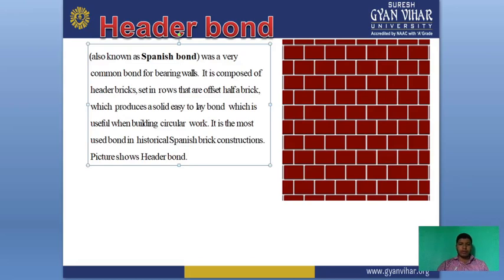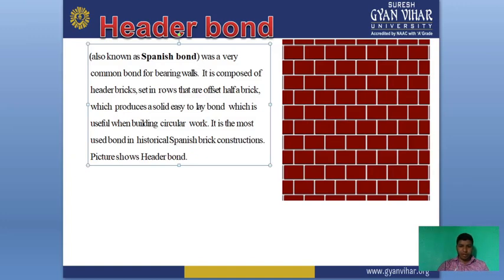Next is header bond. Header bond is also known as Spanish bond and was a very common bond for bearing walls. It is composed of header bricks set in rows that are offset by half a brick, which produces a solid, easy-to-lay bond that is useful when building circular work. It is the most used bond in historical Spanish brick construction. Header bond is called Spanish bond because it was used since historical Spanish brick construction times.